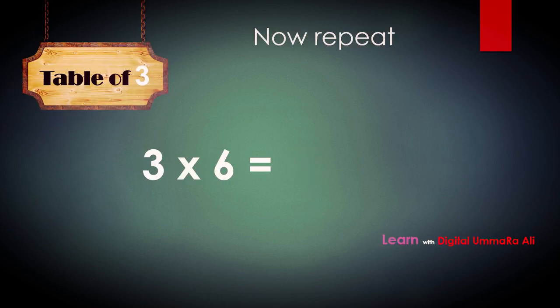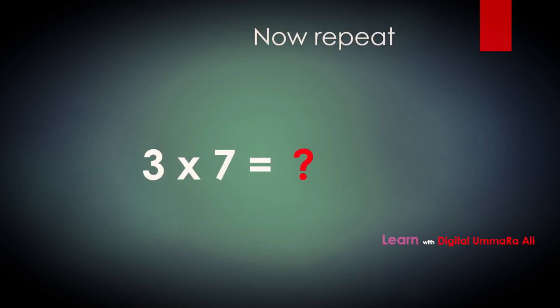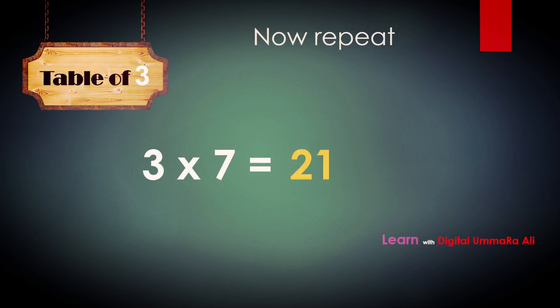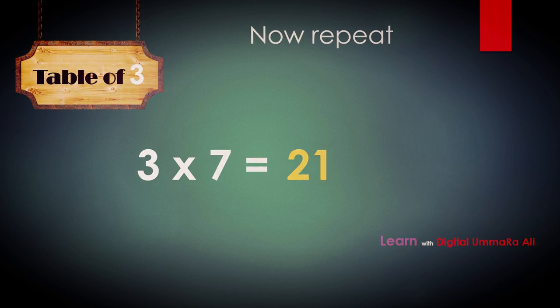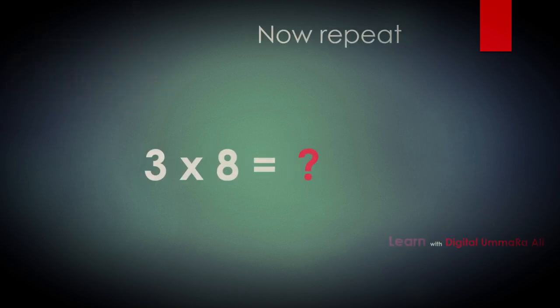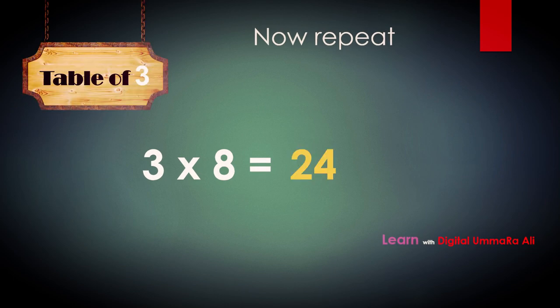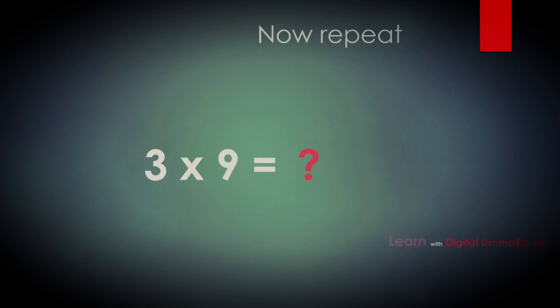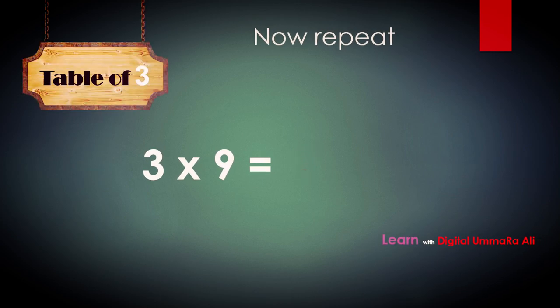Three fives are — yes, tell me — three fives are fifteen. Well done! Three sixes are — three sixes are eighteen. Three sevens are — three sevens are twenty-one. Very good! Three eights are — three eights are twenty-four. Three nines are — yes, tell me everyone — three nines are twenty-seven.